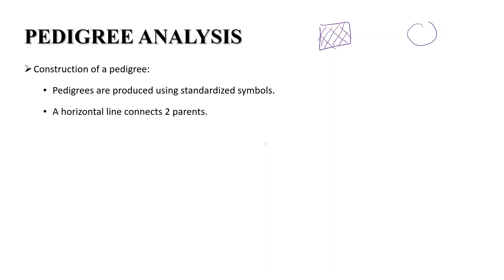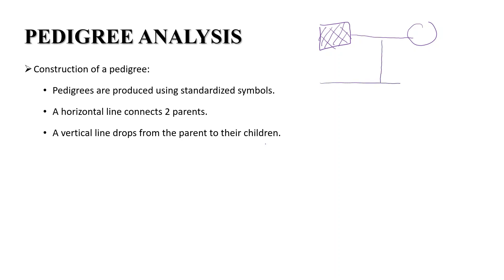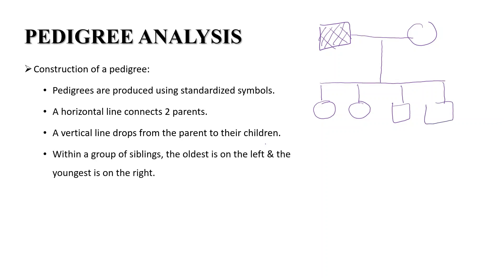A horizontal line connects two parents. So if these two individuals are the parents, you draw a line to connect them. A vertical line drops from the parents to their offspring. So if this couple were to have four children, a vertical line will connect the children to the parents. Within a group of siblings, the oldest is on the left and the youngest is on the right.